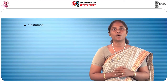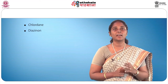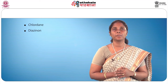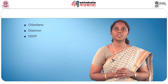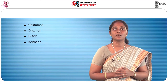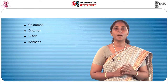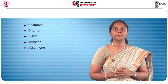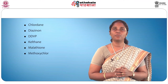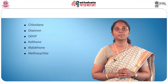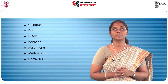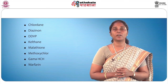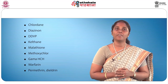Commonly used pesticides include: Chlordane for household pests, termites and cockroaches; Diazinon for cockroaches, ticks, ants, silverfish and spiders; DDVP for cockroaches and houseflies; Kelthane for mites, red spider and carpet beetles; Malathion for mites, household pests, centipedes and millipedes; Methoxychlor for lice, fleas, bed bugs and silverfish; Gamma HCH for wood-boring insects; Warfarin for rats and mice; Permethrin and Delrin for textile pests; and DDT for various household insects.